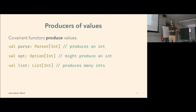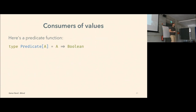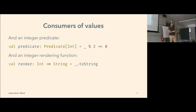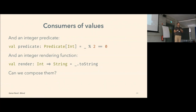We love FP, and we love to look at duals of things. So let's look at the dual of a producer, which is a consumer. Here's a predicate function — a function from A to Boolean. This is a Predicate of A. It kind of looks like a covariant functor. Here's an integer predicate: a function that tests whether a given integer is even. And here's an integer rendering function that takes an int and converts it to a string. The question is: can we compose them together somehow using some sort of map function?